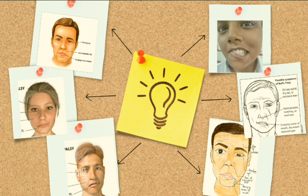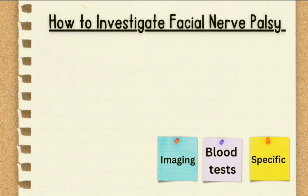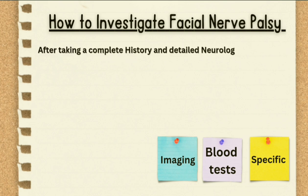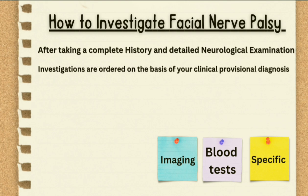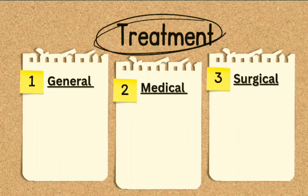Coming towards the investigations — how to investigate a patient with facial palsy. Before ordering investigations, take a complete history and perform a detailed neurological examination; investigations are ordered based on your clinical provisional diagnosis. Investigations are divided into imaging, blood tests, and specific investigations according to cause. These include CT brain, MRI brain, fasting lipid profile, blood sugar levels, HbA1c, nerve conduction study, electromyography, HIV serology, and Lyme antibody testing.